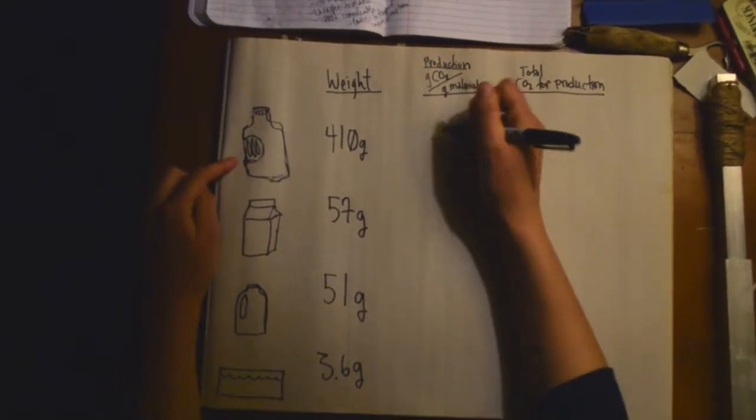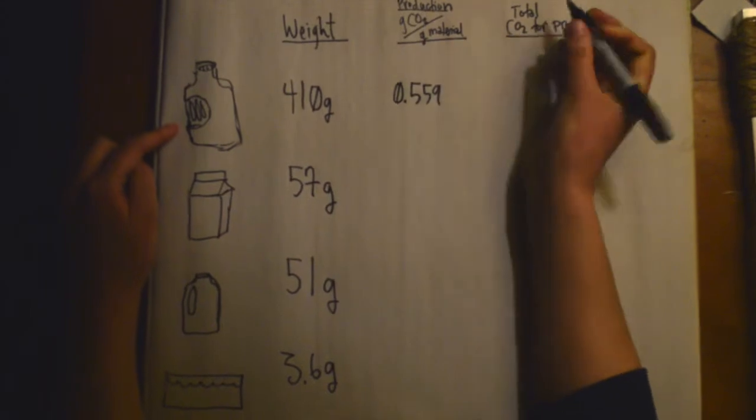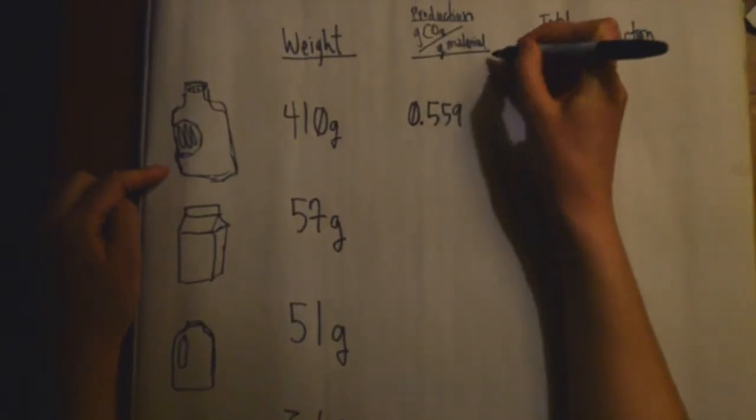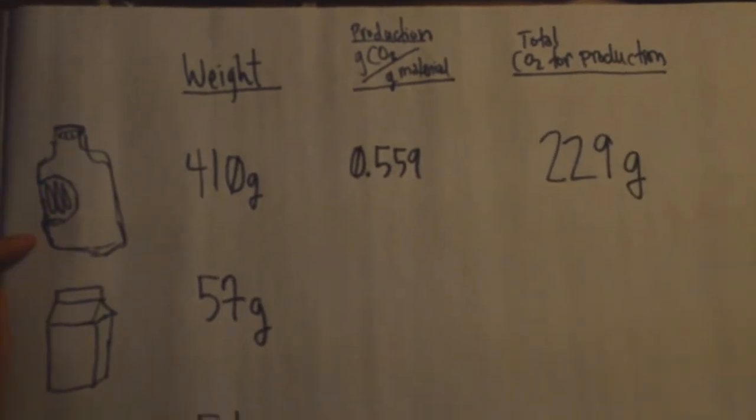So for glass, we found that it's 0.559 grams of CO2 per gram of material, which equals 229 total CO2 emissions.